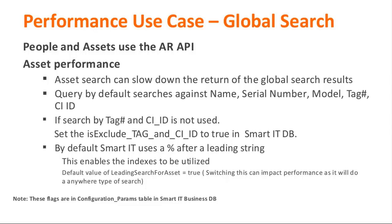Tag number and CIID come from a different table. AST-base element is a join between core base element and AST attributes form. Name, serial number, and model come from the base element, while tag number and CIID come from AST attributes. So under the covers, the database only has to get data from one part of the join, making it much faster. I would recommend setting this flag to true if you're not searching on tag number and CIID, as this will vastly improve performance.